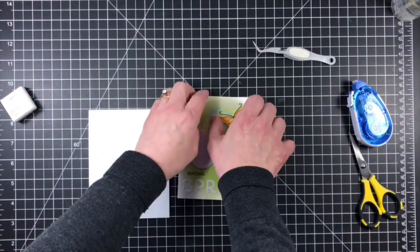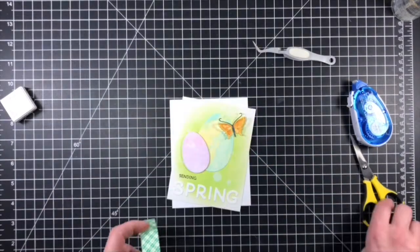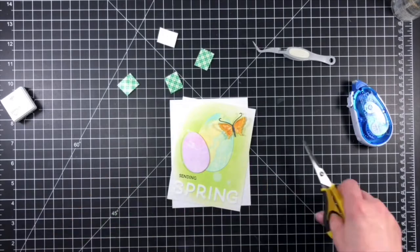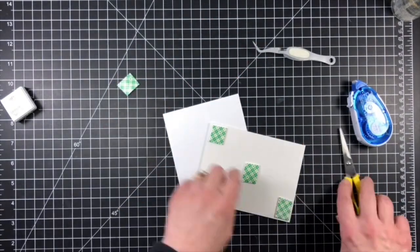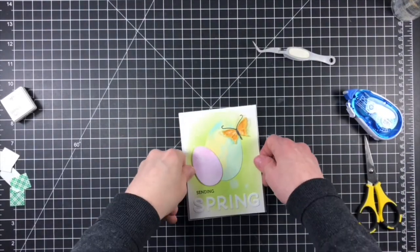Now that my sentiment was in place I put the rest of my card together using a combination of tape runner and foam tape. The entire front panel was adhered to a top folding white card base with foam tape. To finish the card off I added a few sparkling clear sequins for a little extra sparkle.